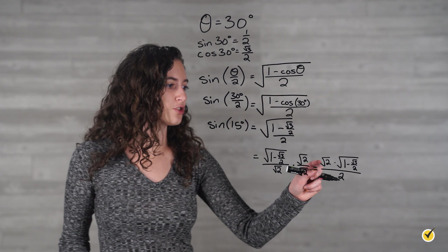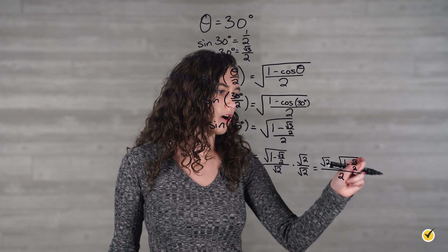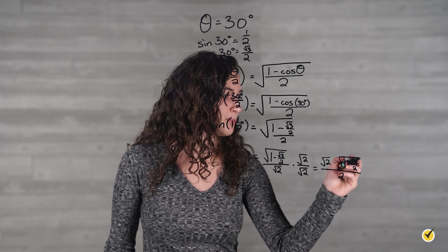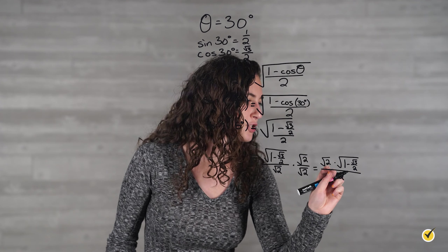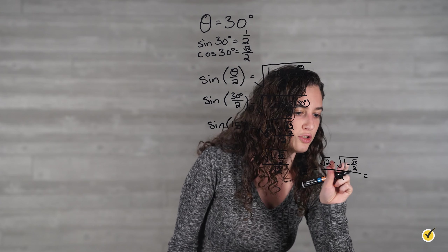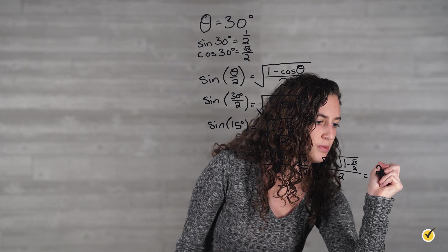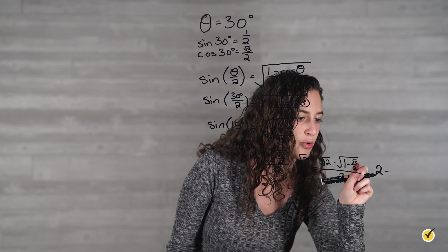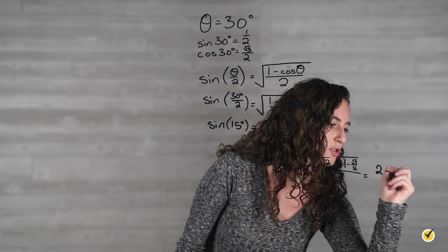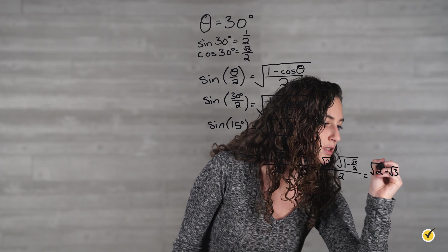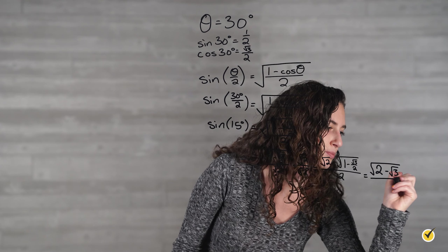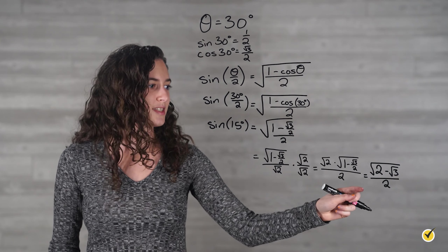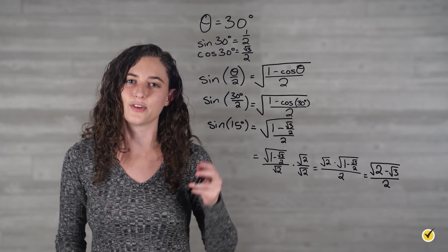From here, we're going to distribute this 2 into our other radical. Since they're both radicals, we can simply multiply by 2. So we'll get 2 times 1 is 2, minus the square root of 3, over 2 times 2 which is just the square root of 3. And we're still taking the square root of this, over 2. So this is the simplified form of sine of 15 degrees.